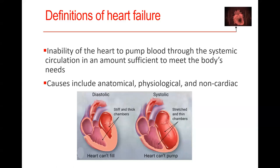Their lungs are wet, they gained 10 pounds, can't get their shoes on, and they're hypotensive. Do they have volume? Yes. Is it in the right space? No. So you might start with diuresis — but that may not work if they don't have effective blood flow to the kidney. We typically start with diuresis if we think a patient has heart failure.